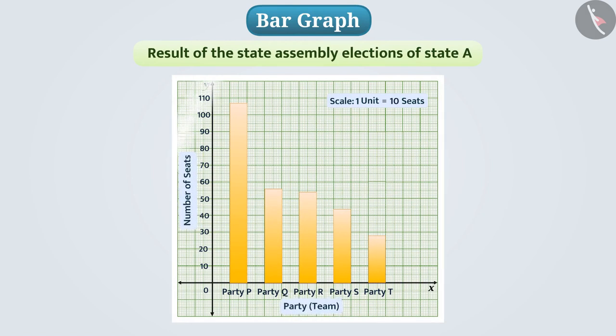Let's understand this bar graph. In this bar graph there is a horizontal line which we call the x-axis and the vertical line that we call the y-axis. Here party is on the x-axis and the number of seats is on the y-axis.